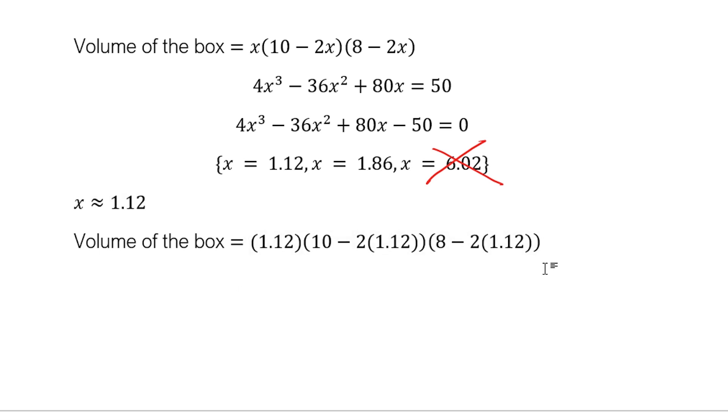It's over by 0.06 because x equals 1.12 is just an approximation. So the first one is correct. Let's have x approximately equal to 1.86. Let's see whether 1.86 works. Let's substitute again.